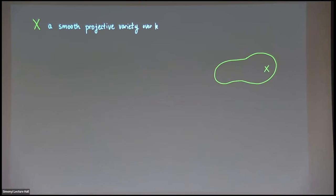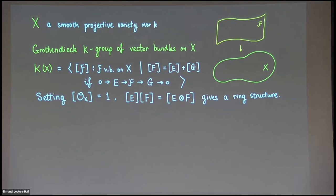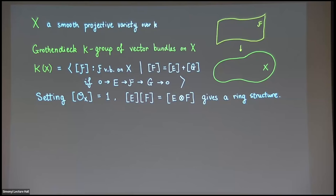Let's start from the classical story of K-rings. We start with a smooth projective variety over arbitrary fields. It may carry some vector bundles, and we consider them all and form the Grothendieck K-group of vector bundles. It's generated as an abelian group by isomorphism classes of vector bundles, modulo the relation that whenever you have E, F, G forming a short exact sequence, the class of F equals the class of E plus the class of G. Setting the class of the structure sheaf as one and multiplication as the tensor product, you get a ring structure.